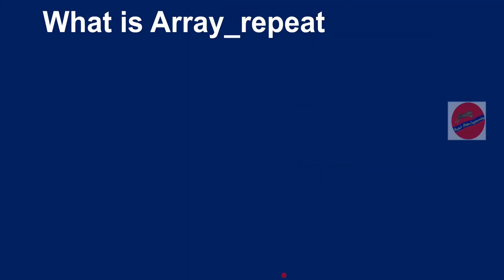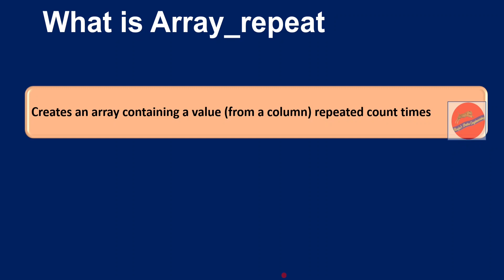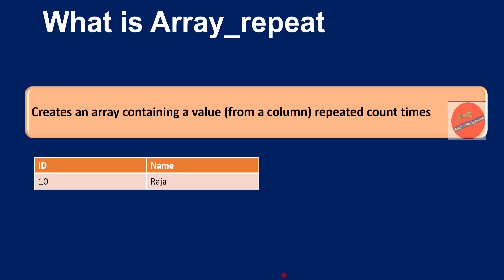First, let us understand what arrayRepeat is. ArrayRepeat is a PySpark function which creates an array containing a value from one of the dataframe columns with a repeated count. For example, let's assume we have a dataframe with two columns — id and name — with values 10 and Raja. If I have to create a repeated array value of the id column, this value 10 should be repeated 5, 10, or even 1000 times.